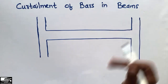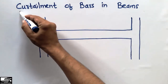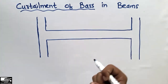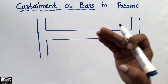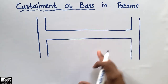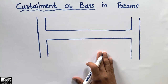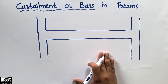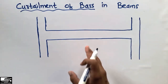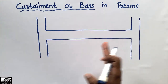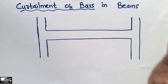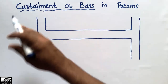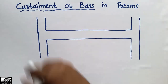The curtailment of bars is needed in the beam because we want to make an economical structure. We don't provide extra bars that are not necessary to take the load. We should make our structure economical and safe — these are the basic requirements of any civil engineering structure: first safety, then economy. That is why we curtail our bars in beams. Curtailment means to cut off the bars.